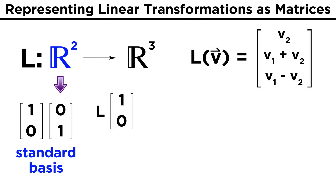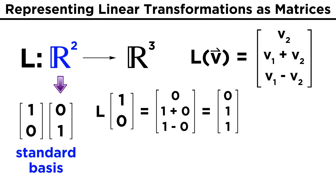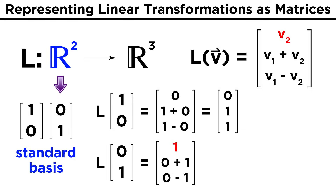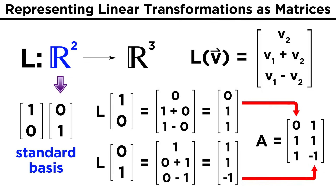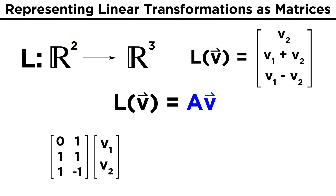Transforming (1,0), we get (0, 1+0, 1−0) = (0, 1, 1). Transforming (0,1), we get (1, 0+1, 0−1) = (1, 1, −1). These two vectors will be the columns of our matrix, giving us the 3-by-2 matrix with columns (0,1,1) and (1,1,−1). We can verify that multiplying our vector V by this matrix will give us our linear transformation.